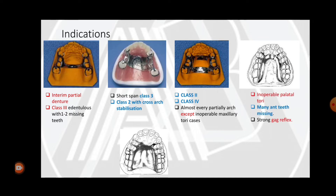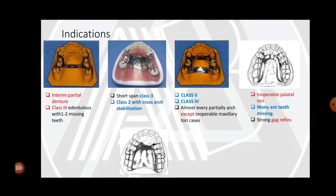The U-shaped or horseshoe-shaped major connector is used in cases of inoperable palatal torus. We cannot use the closed horseshoe in that case because its posterior component would compress the torus and cause discomfort. The U-shaped connector is also used when many anterior teeth are missing or when the patient has a strong gag reflex that cannot be controlled.